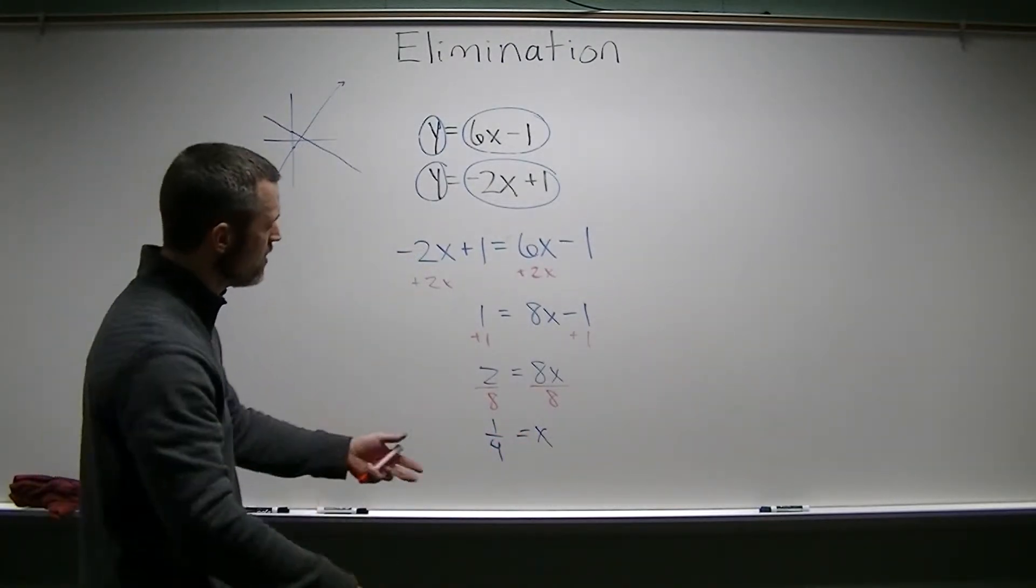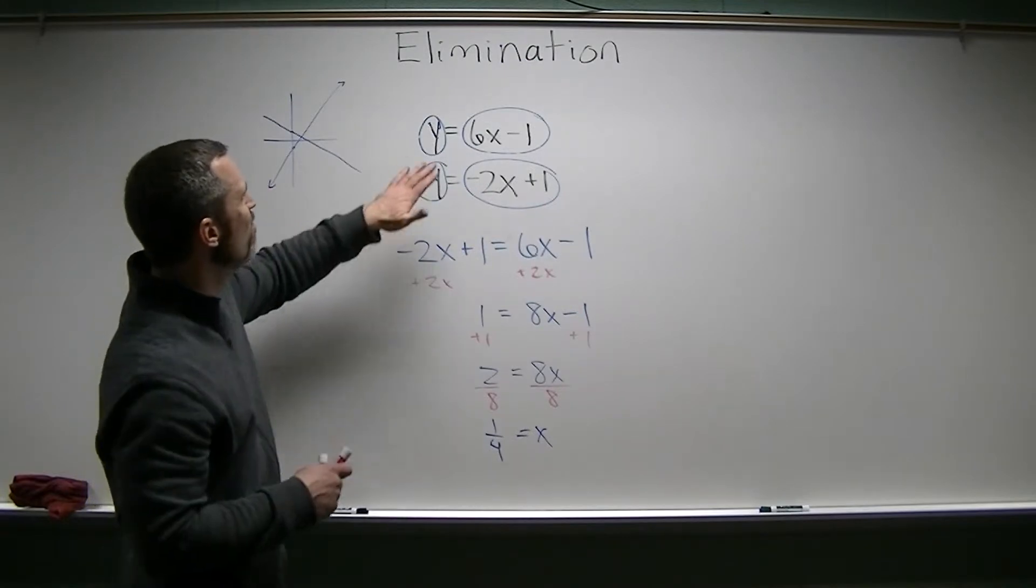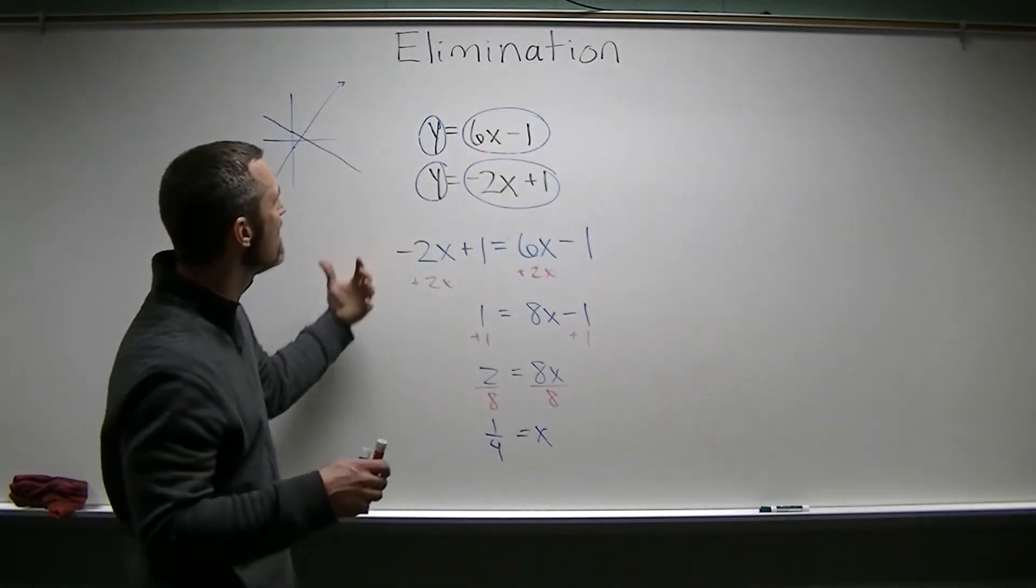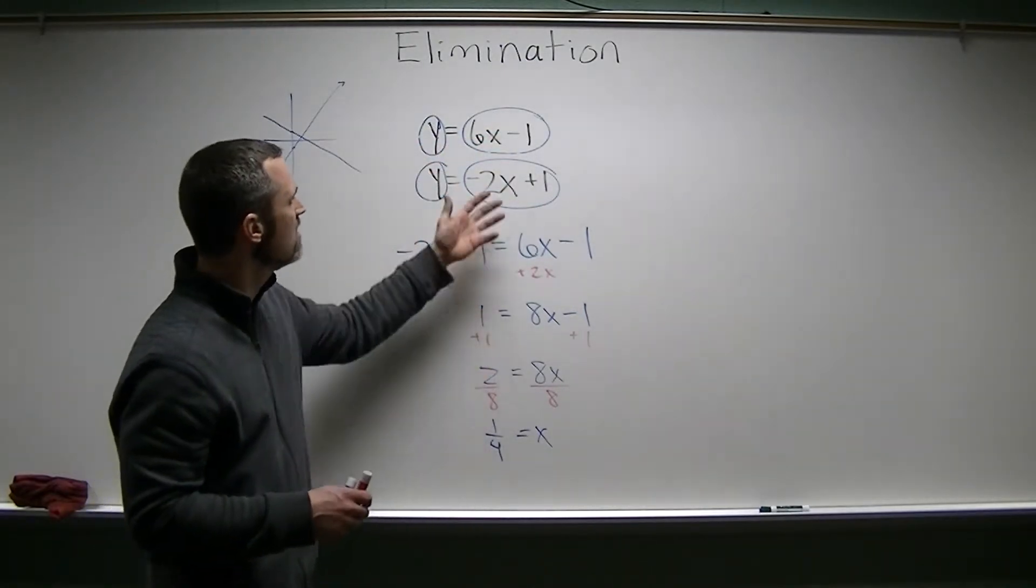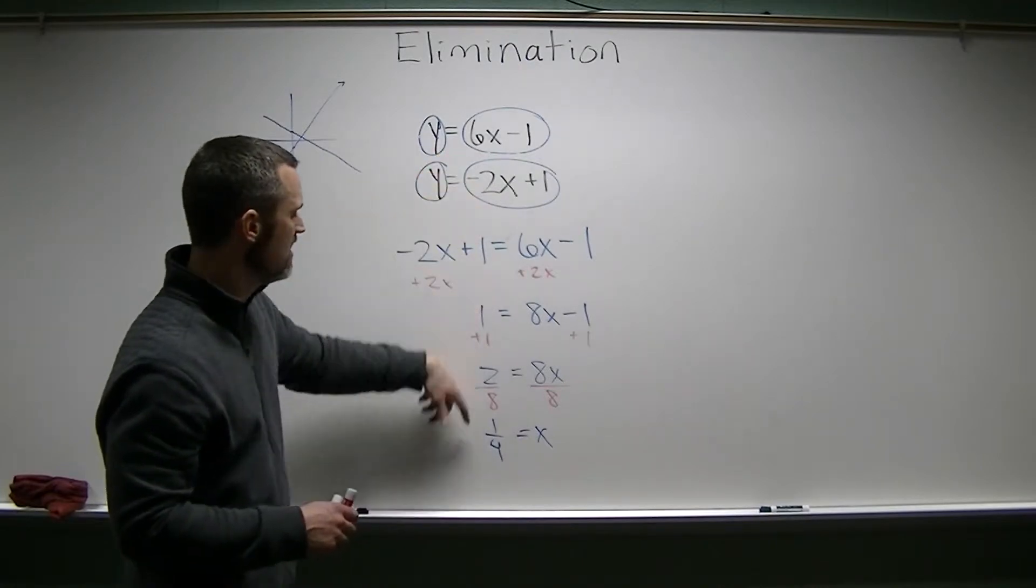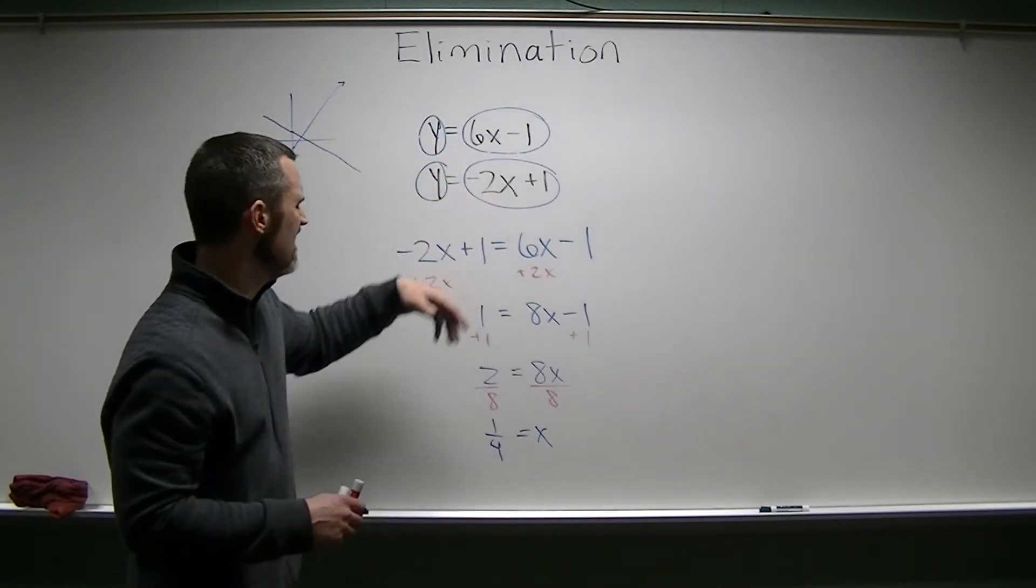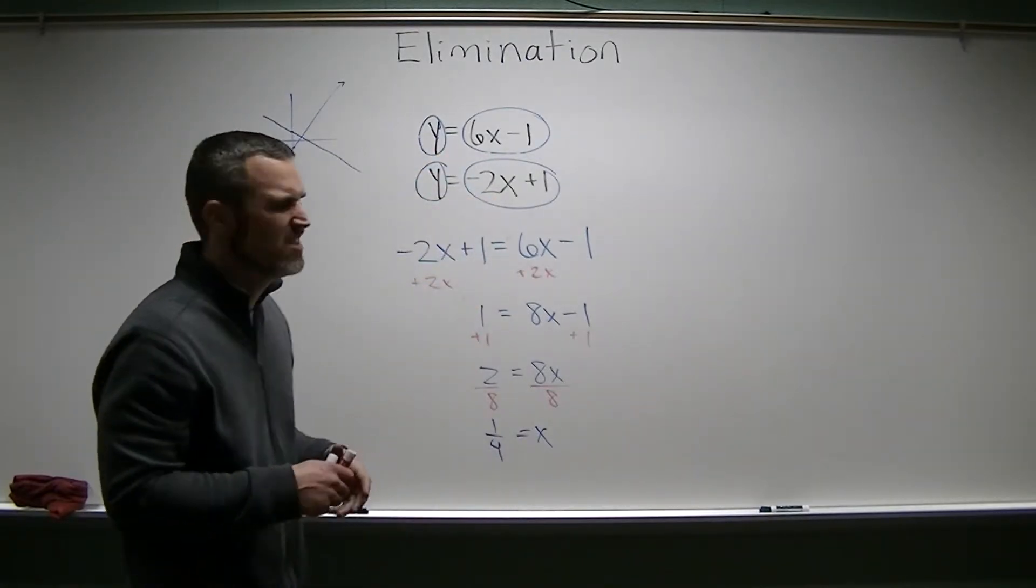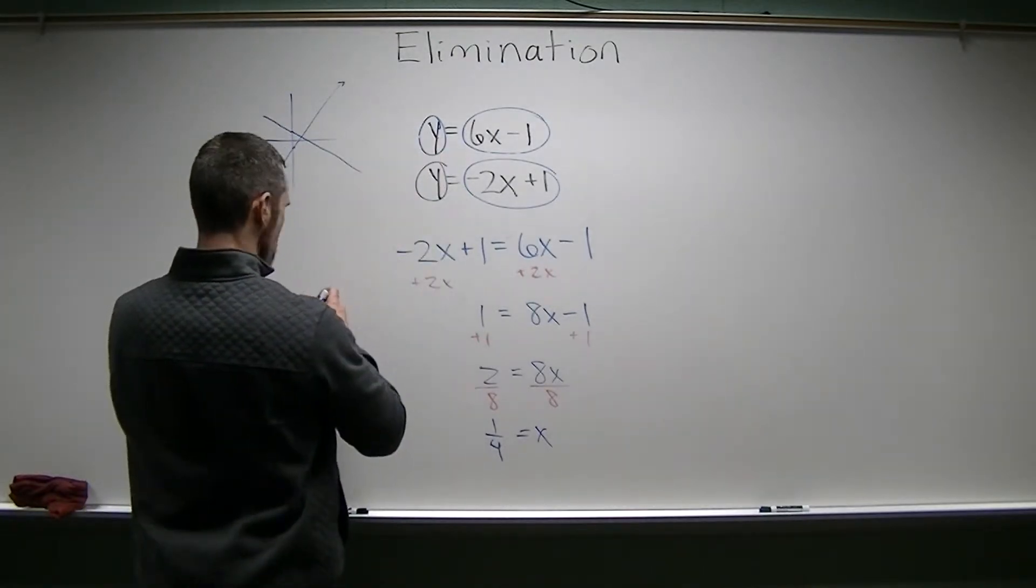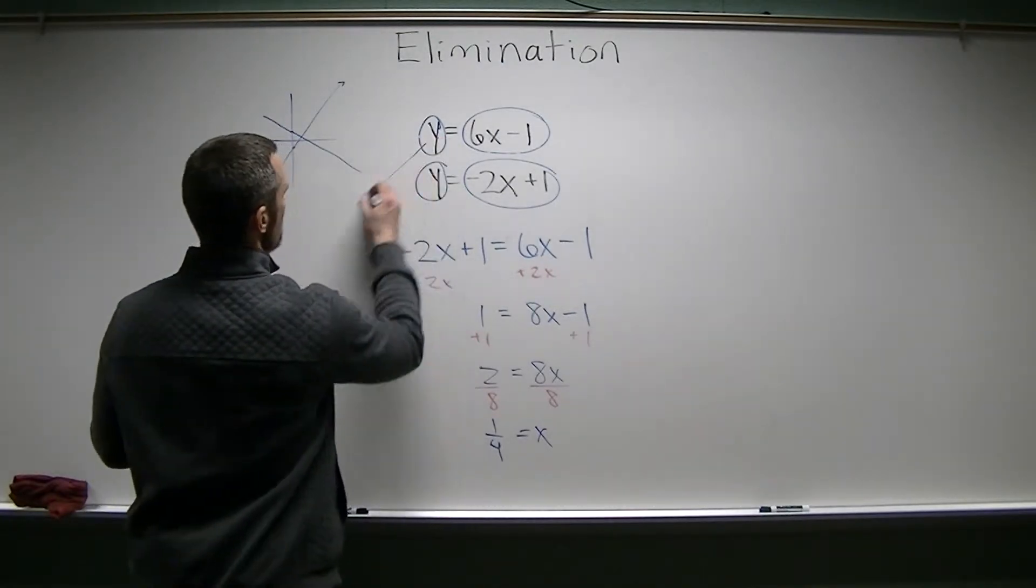Now, I still have to find my y, so I get to plug this one in. And when I look, both are perfectly set up to find y, so it doesn't matter which one I plug this into. I can either take 6 quarters, I can take negative 2 quarters. I don't know, negative 2 just doesn't sound as friendly. So I'm going to take this equation right here. Yeah, we'll use blue, that's good.